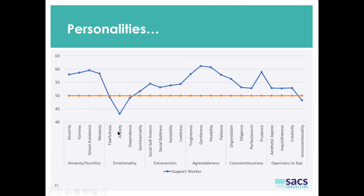How about emotionality? The good news is that the sector in general is reasonably emotionally stable. Sentimentality, dependence, and fearfulness are about population average, and anxiety is really quite low. Anything in a big sample below 45 or above 55 you'd say is a fair divergence from population average — so this is a relatively emotionally stable sector.